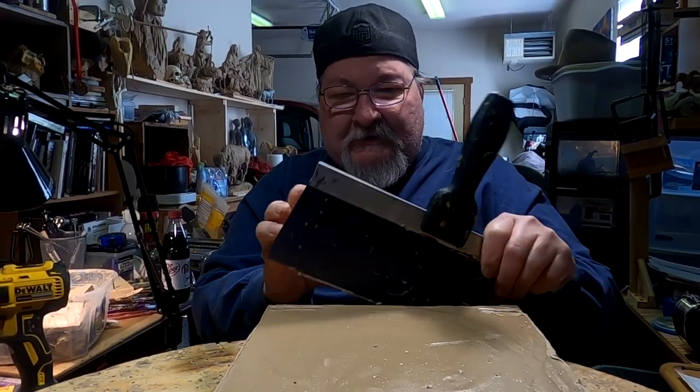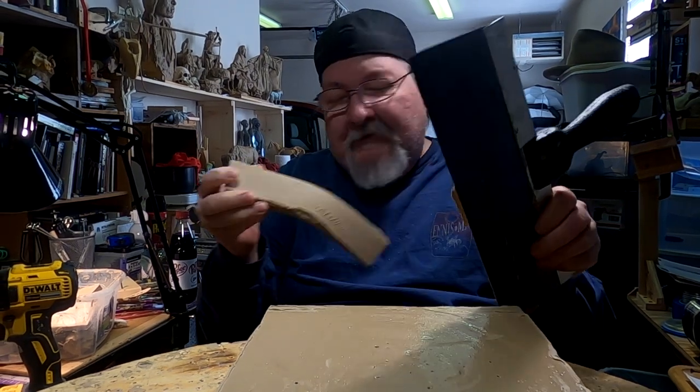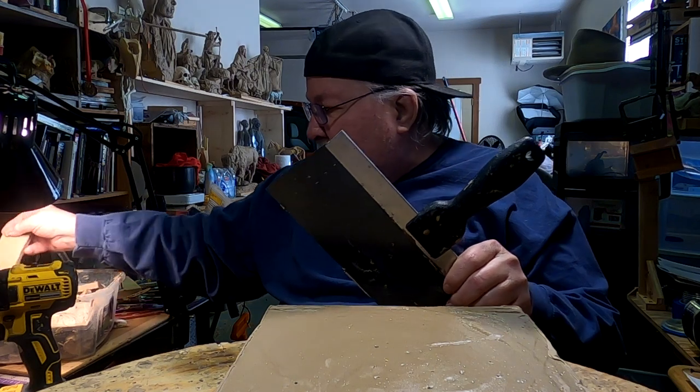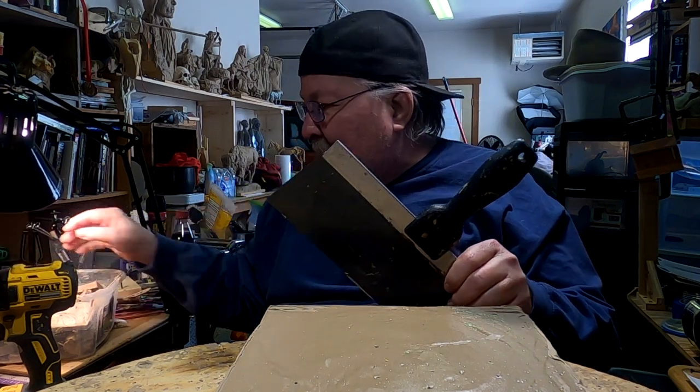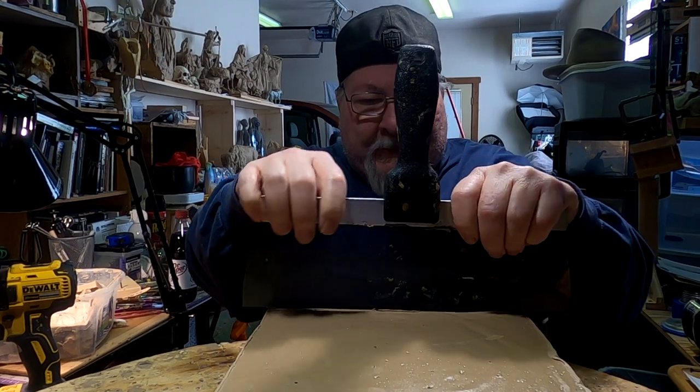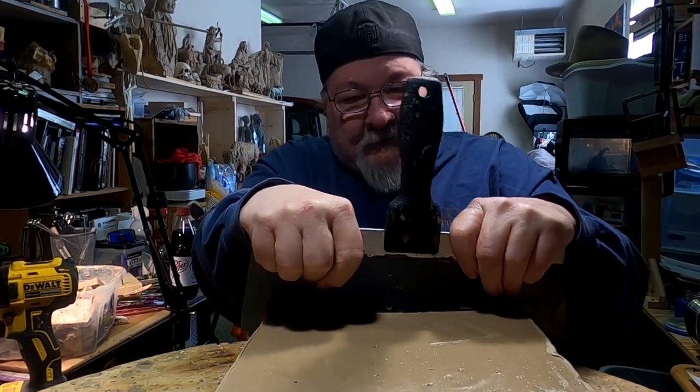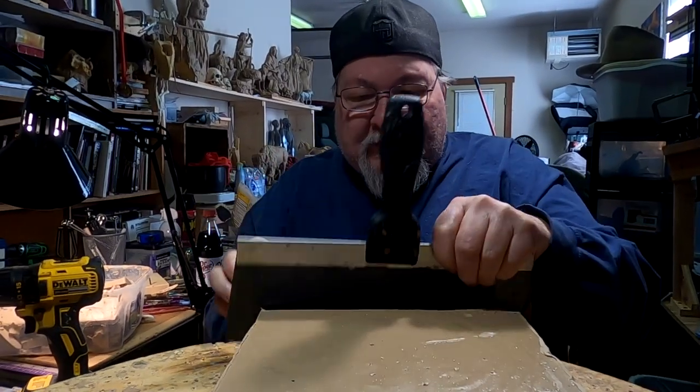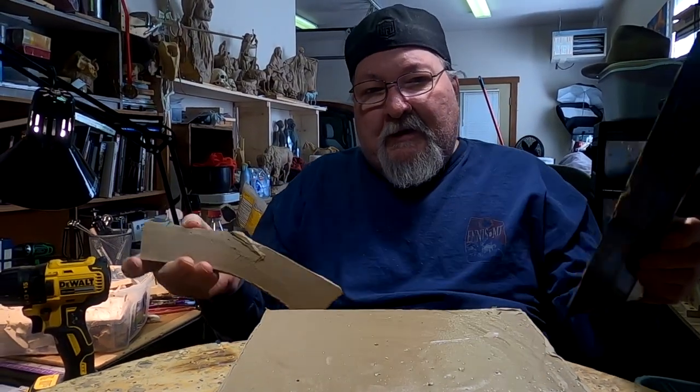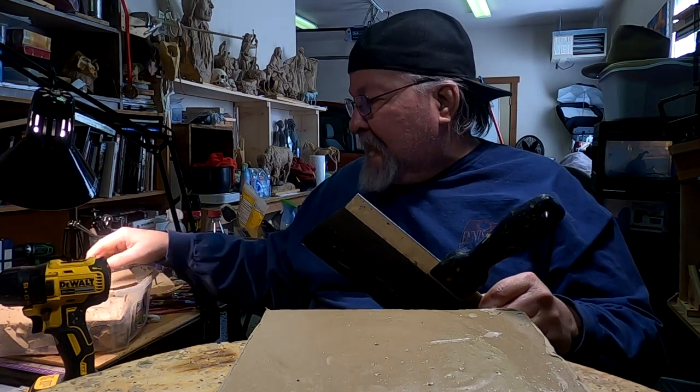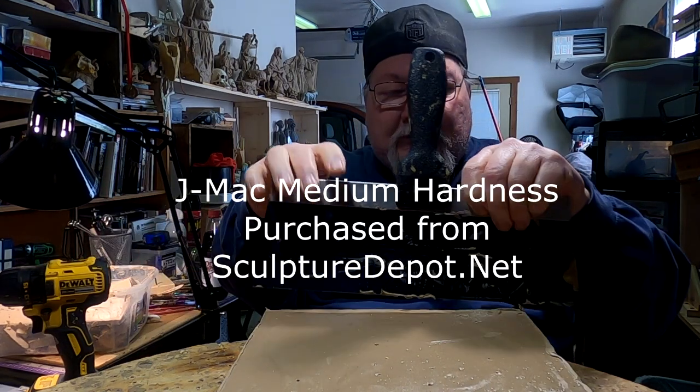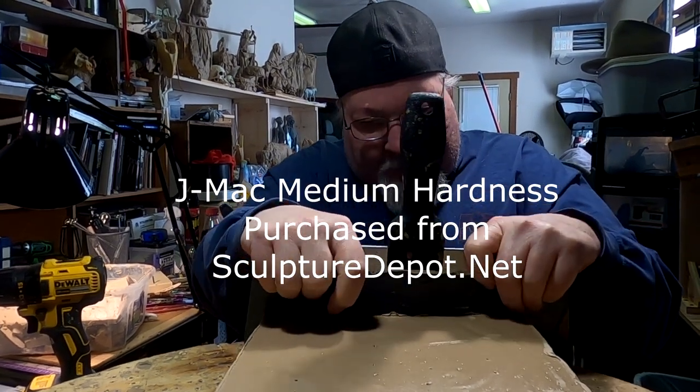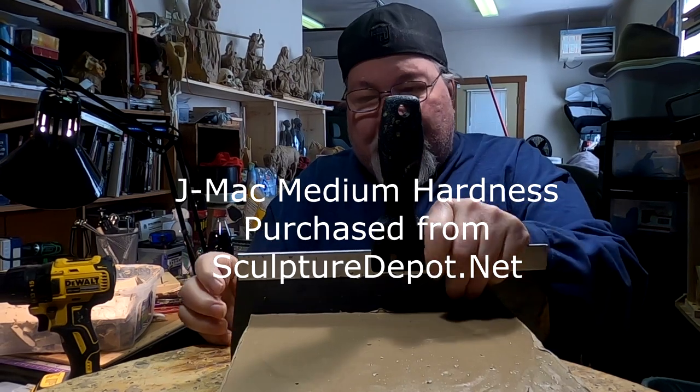But I thought I'd come down and at least get the clay started softening underneath the light so that I'd have a good supply ready to go. So what I do is I cut the clay up into smaller pieces out of the 10-pound block of this clay that I've got, which is a J-Mac medium hard clay I got from Sculpture Depot.